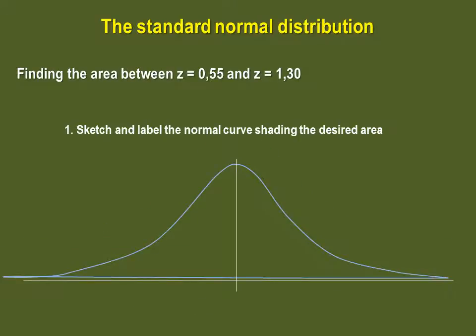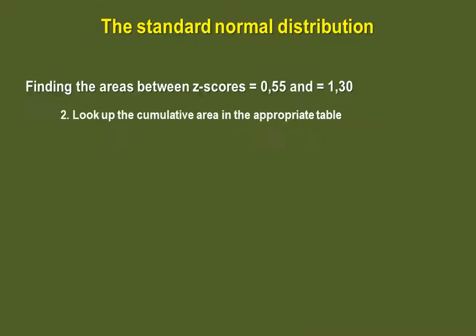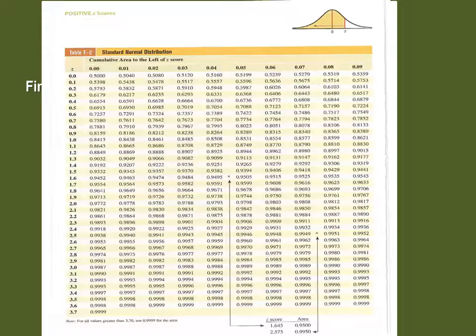We can also find probabilities or areas between two given values. Say you are looking for the area between Z-scores of 0.52 and 1.30. Again, the first thing to do is to sketch what you are looking for. Then, you look up the areas to the left of both of the Z-scores.